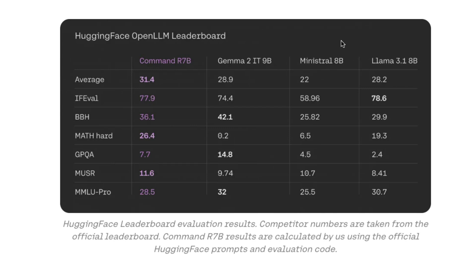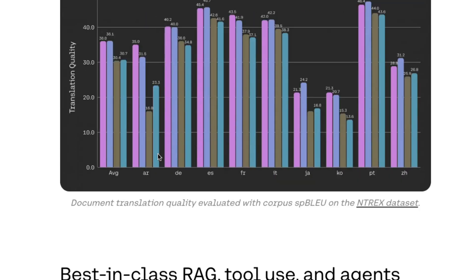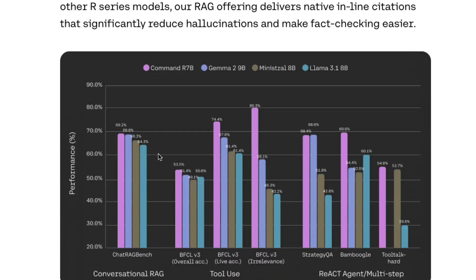Command R 7B is a lot better than Mistral or Ministral 8B, and also better than Gemma 2 from Google. On the Open LLM Leaderboard, Command R 7B has an average score of 31.4 and does an overall pretty good job across multiple benchmarks.